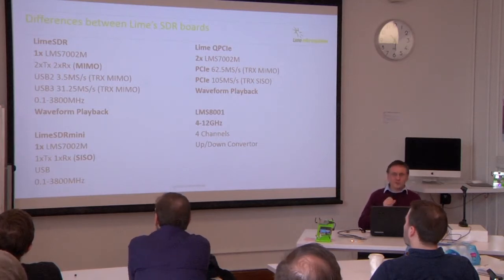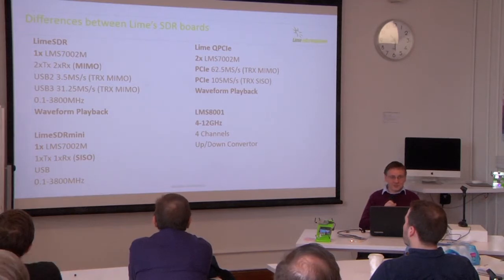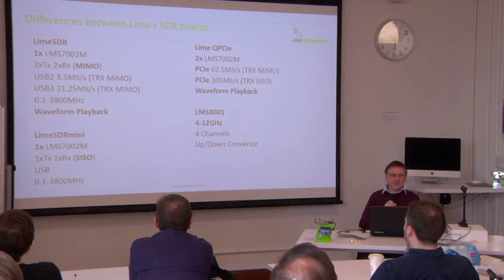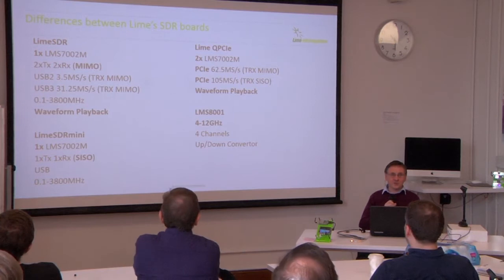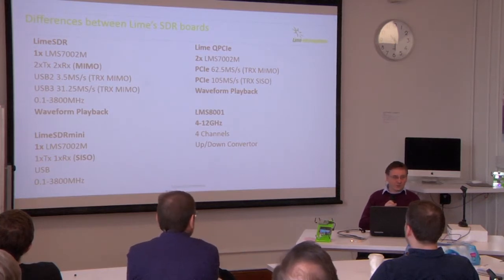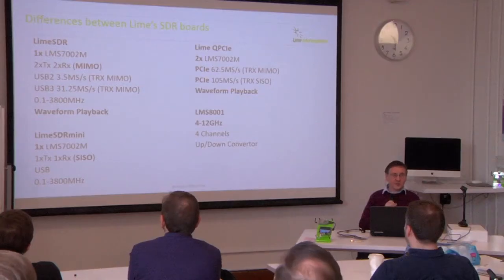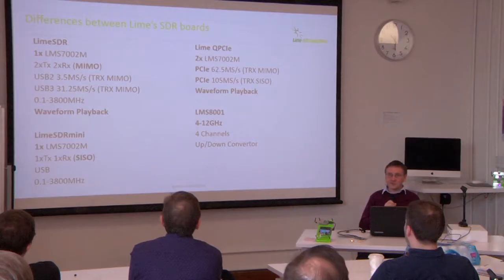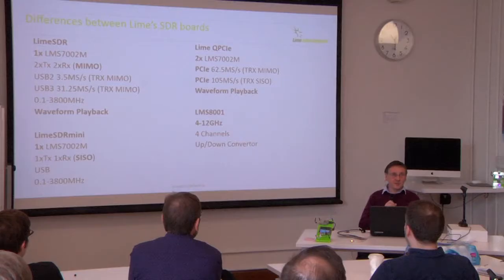There's also the 8001 device, which is an analog up-converter/down-converter taking you from 3.8 GHz up to about 12 GHz. If you're serious about satellites or point-to-point radio links, this is the device you probably need.